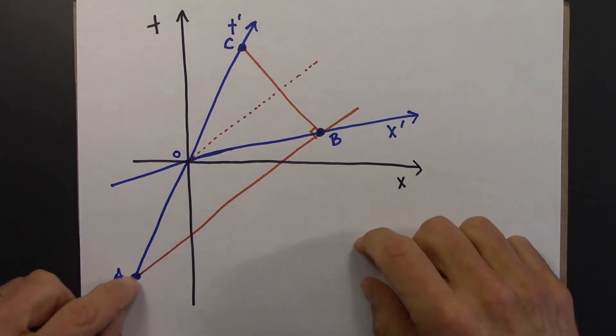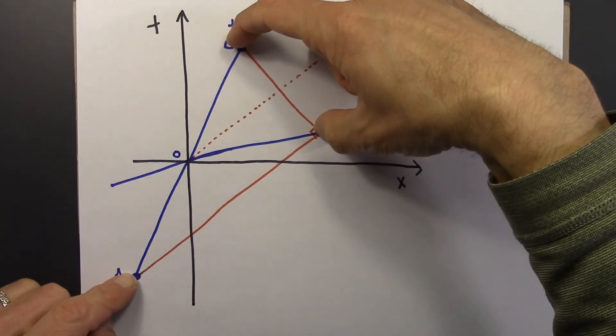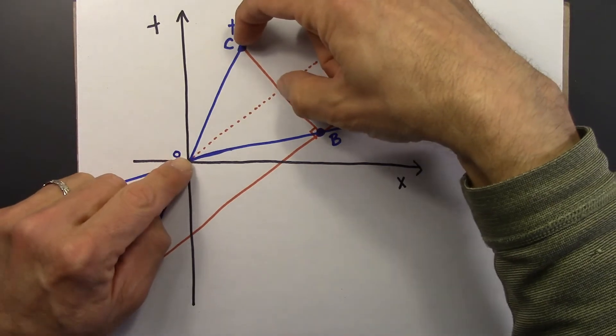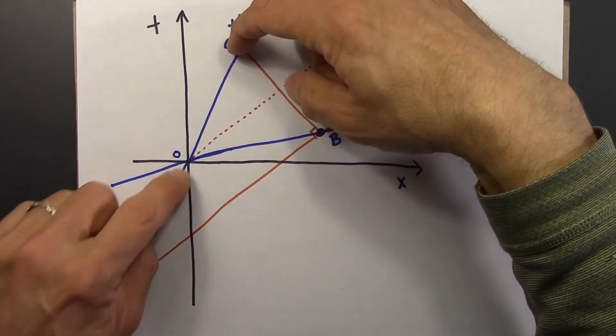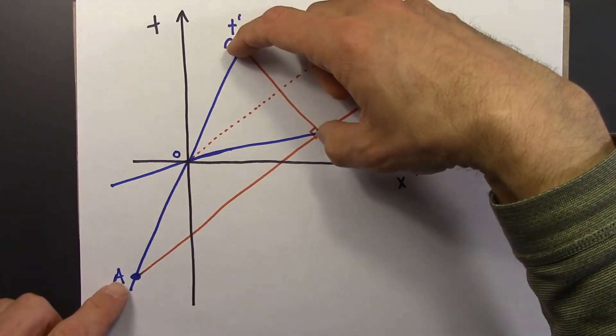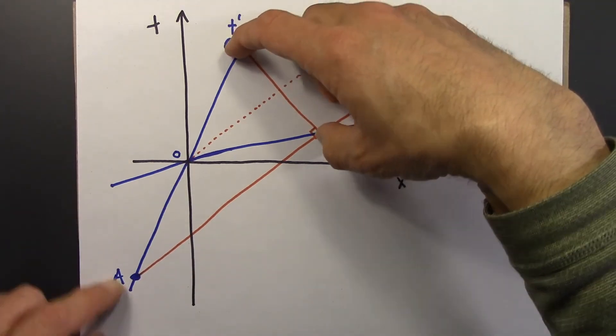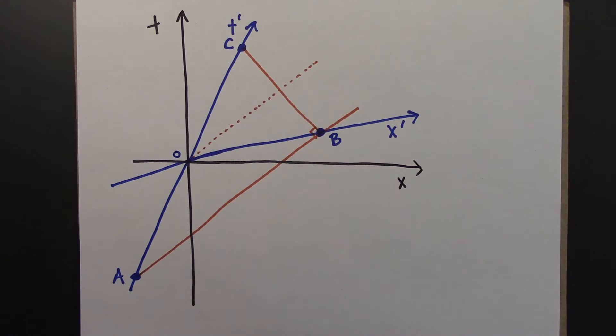Alright, so here's a triangle. And here's a triangle. And I claim that these are similar triangles. Let's see, why do I claim that? Well, I think that is true.